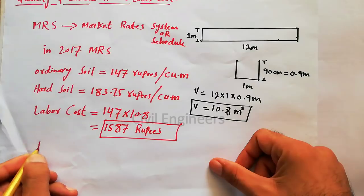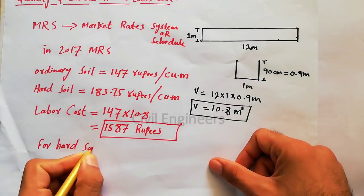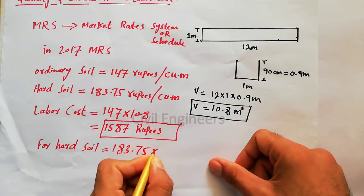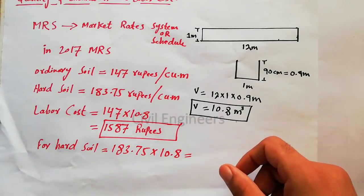Suppose if this foundation is hard soil, we will multiply with 183. So for hard soil it will come 183.75 multiplied by 10.8. It will come...